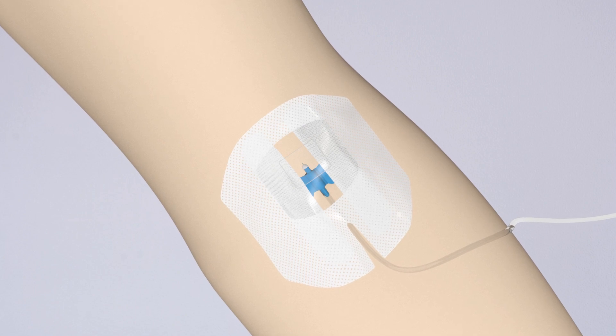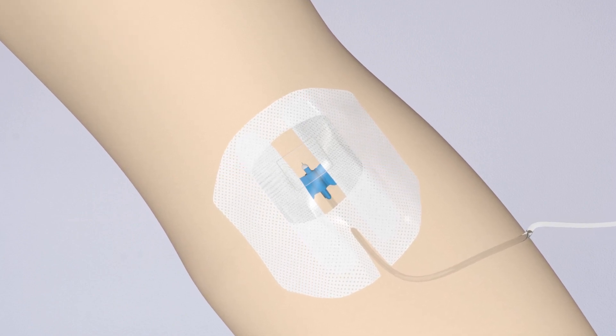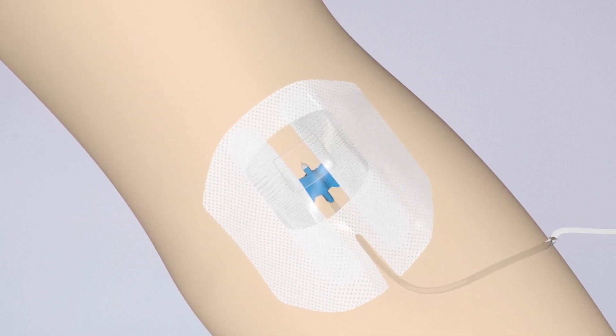AbsoClear IV is clear, transparent hydrogel, which allows easy monitoring of catheter insertion site.